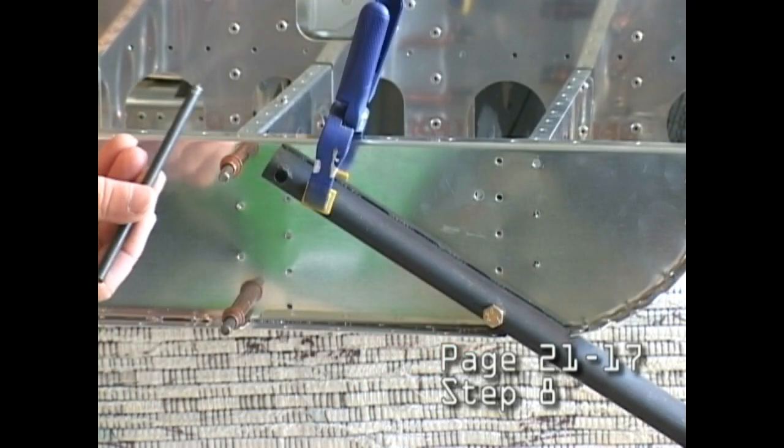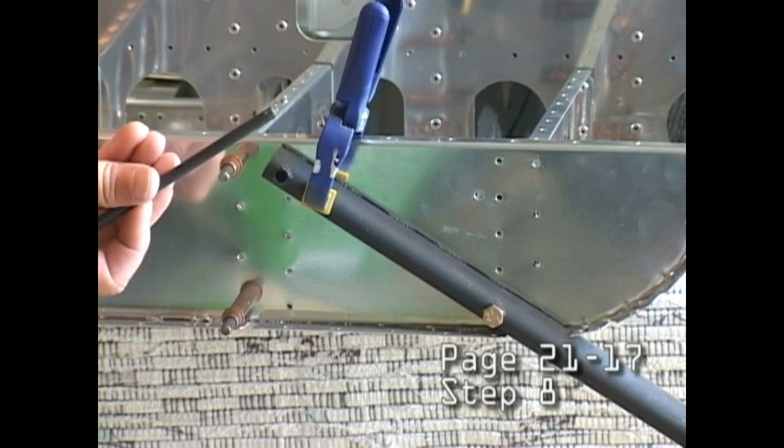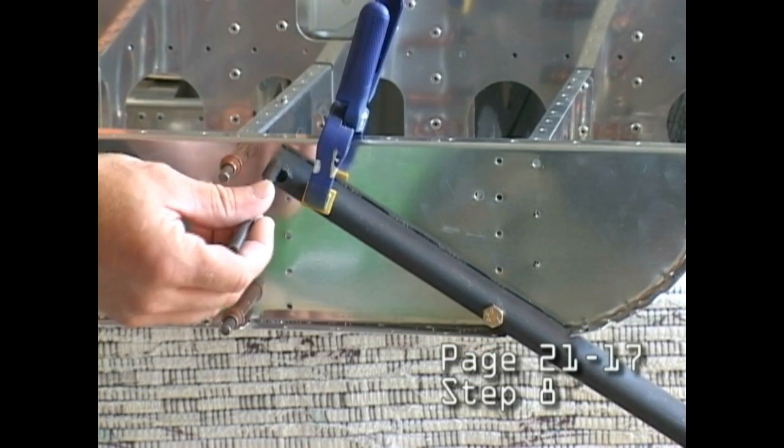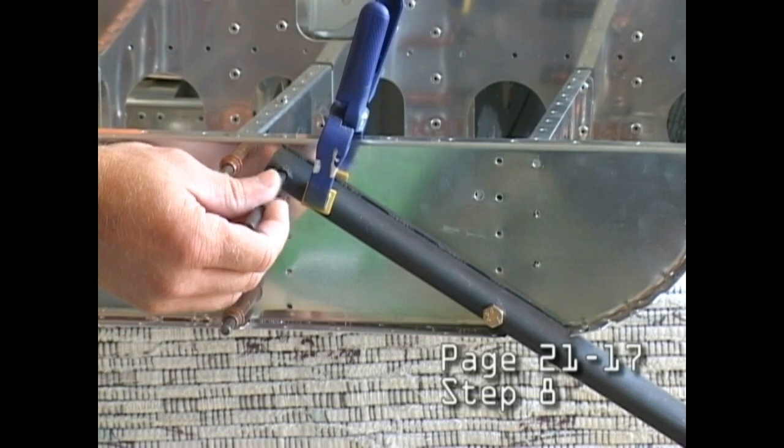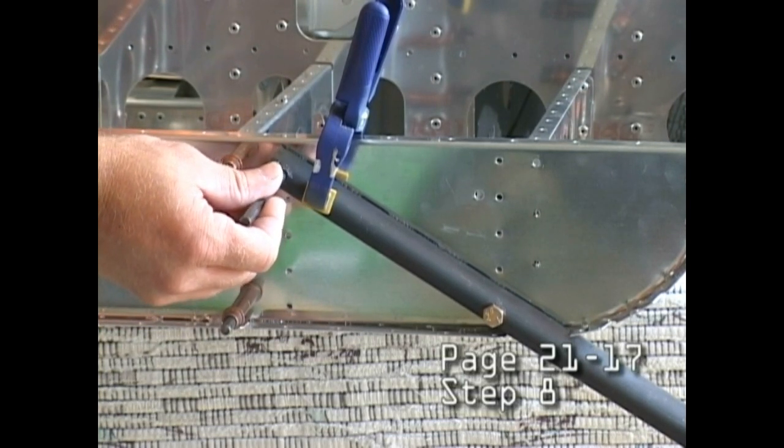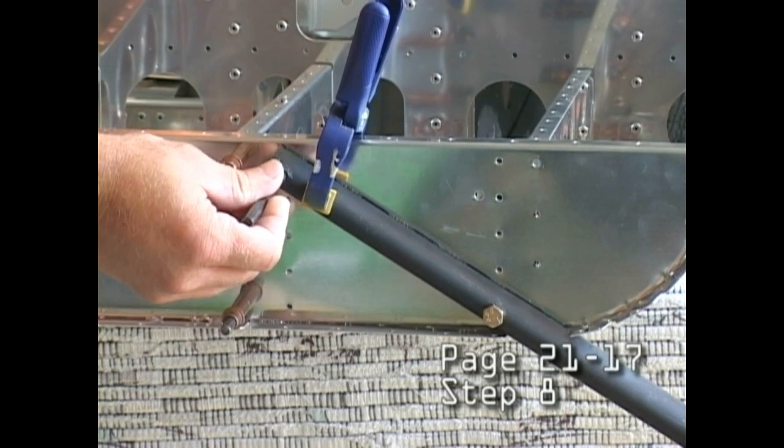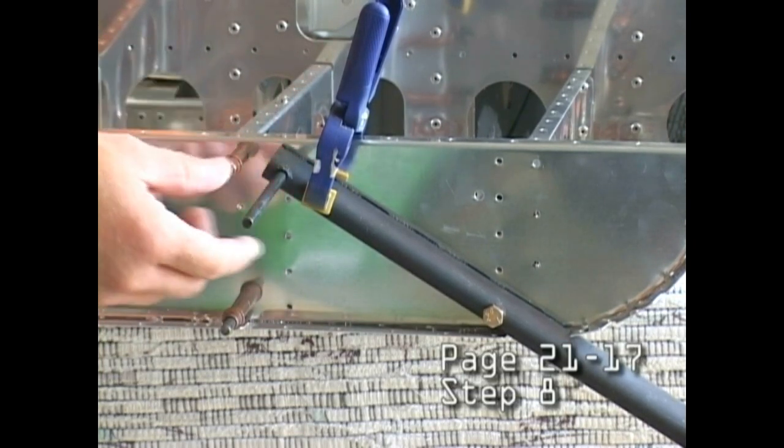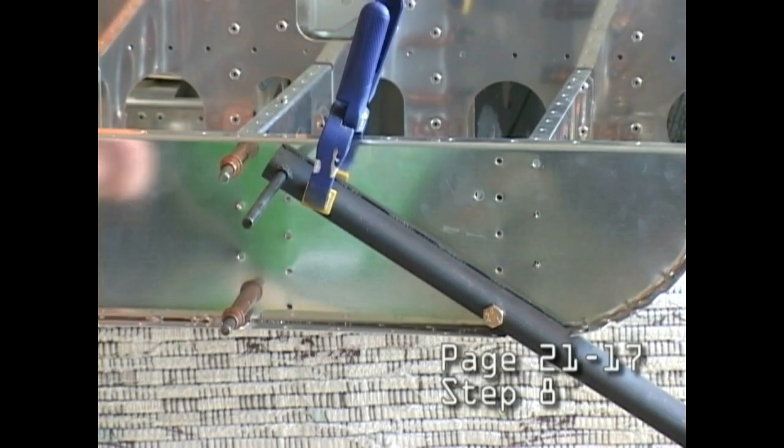I can use a punch to help locate the hole so I don't have to drill the quarter-inch right off the bat. I'll tap this with a hammer and get a location and get it started with the smaller drill bit.